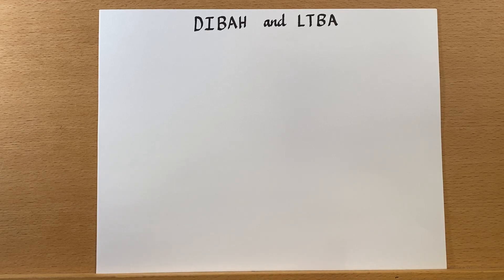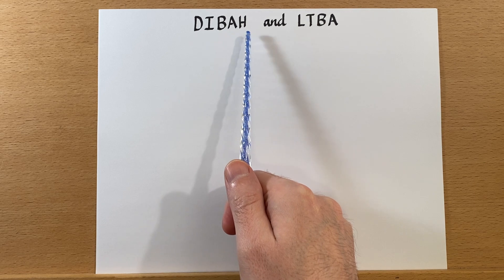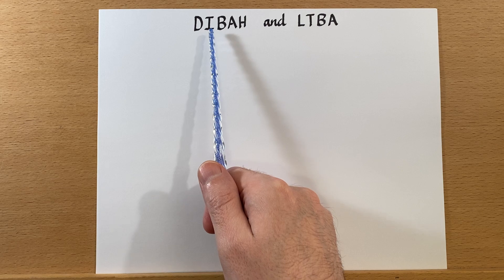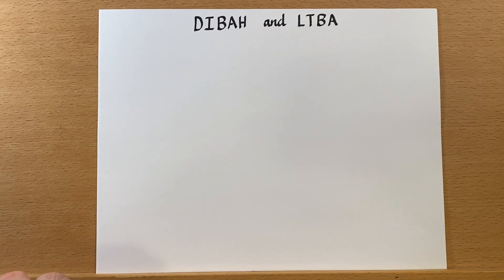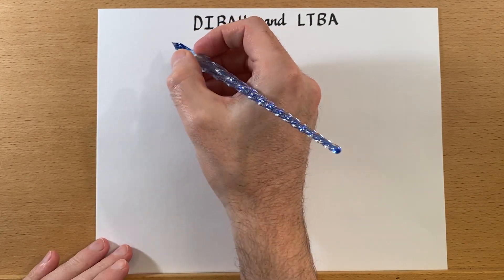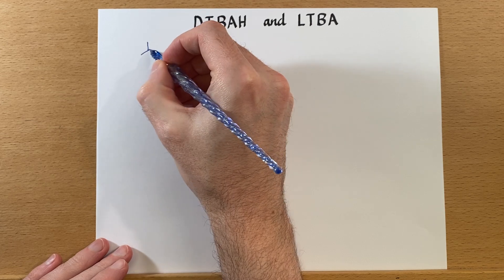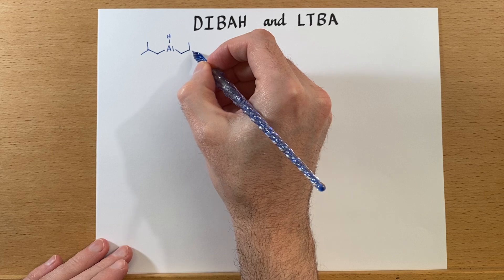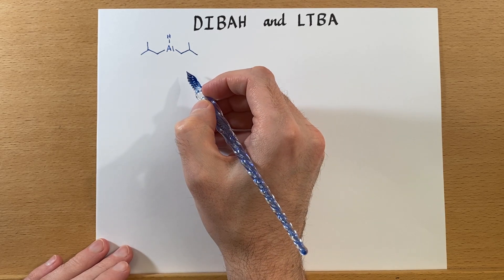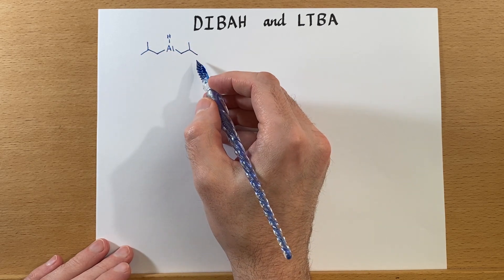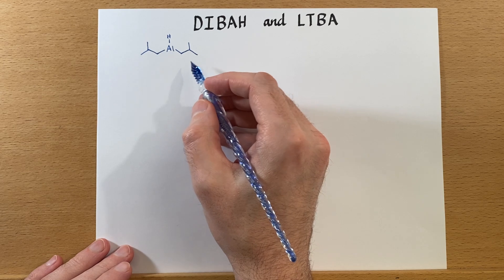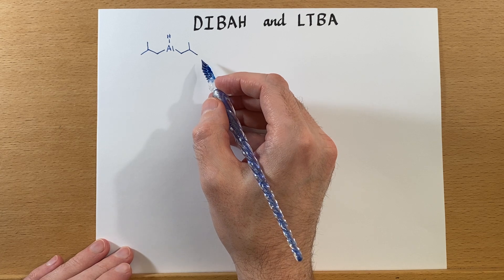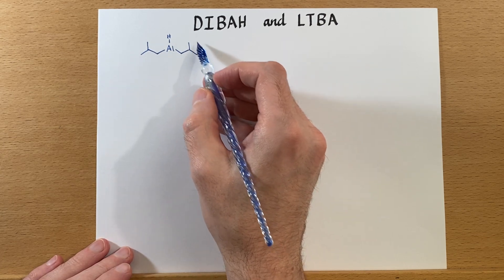We've talked about some reducing agents like lithium aluminum hydride and sodium borohydride, but let's talk about some specialized ones with the abbreviations DIBAH and LTBA. The first one is diisobutylaluminum hydride. Here's the hydride hydrogen and then we have two isobutyl groups. This reducing agent is weaker than sodium borohydride or lithium aluminum hydride, and one of the main reasons for that is the steric hindrance that these isobutyl groups provide.